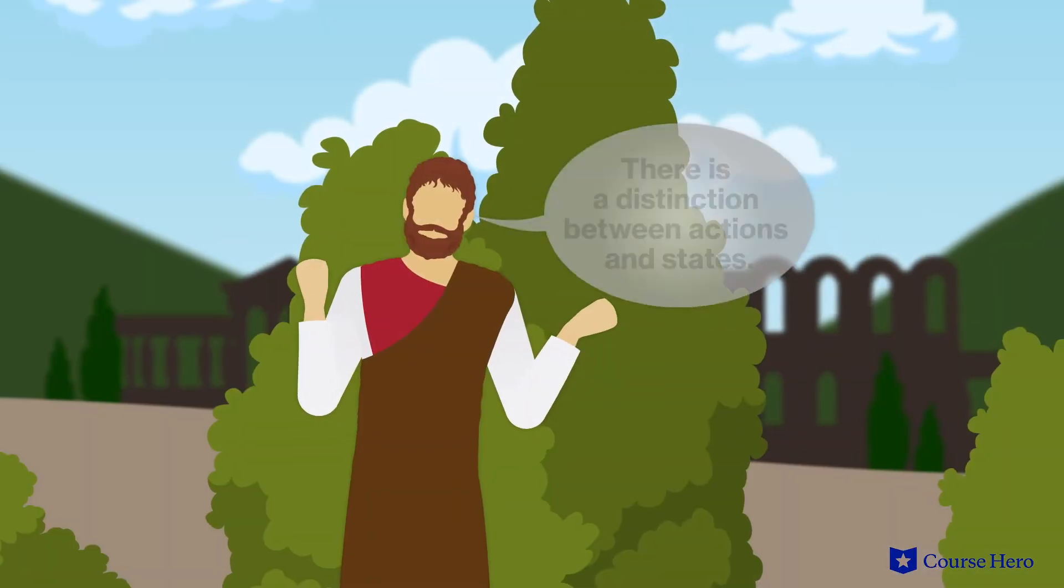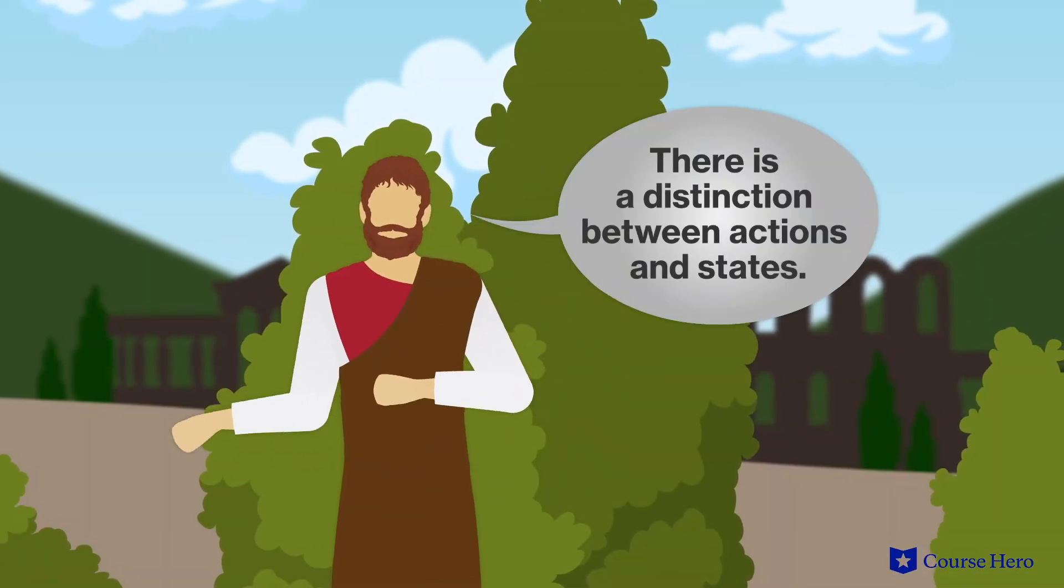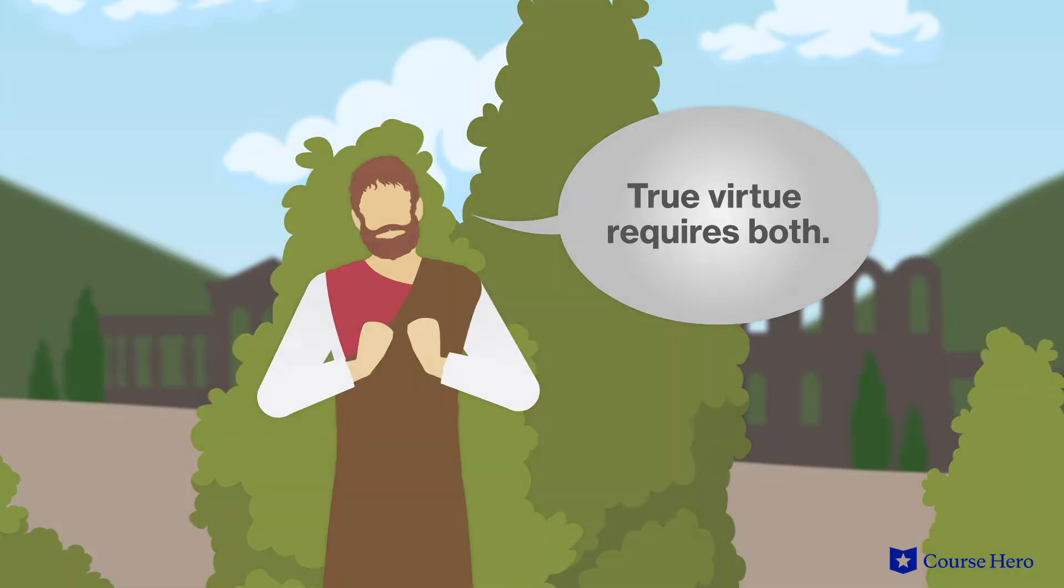In section three, people will take pleasure in doing the right thing as long as they're in a virtuous state. Aristotle clarifies the distinction between actions and states. True virtue requires both. Virtue and vice are about pleasures and pains, and everyone seeks pleasure and avoids pain from infancy onward.